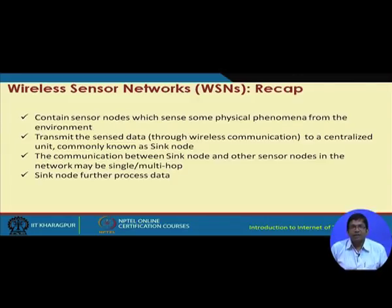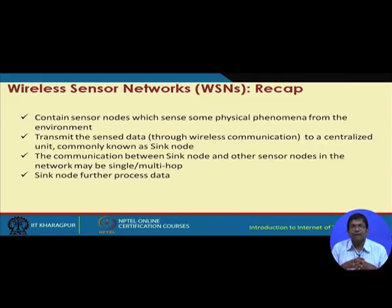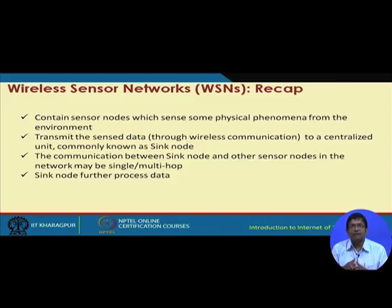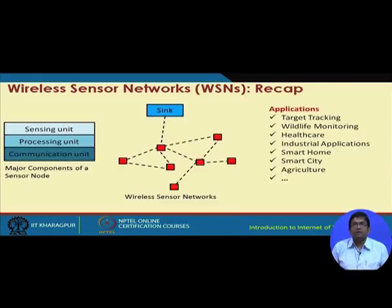As a quick recap of sensor networks: we have sensor nodes sensing the physical phenomena occurring in their environment. These nodes send the sense data to a sink, which is a centralized unit. The communication between the sink and other sensor nodes is typically multi-hop, though it can also be single-hop if the source node and sink are sufficiently close. The sink either processes the data itself or sends it to a server for further processing.